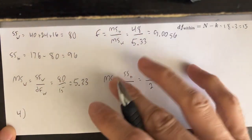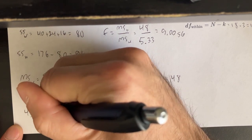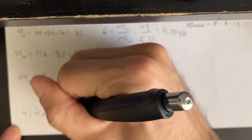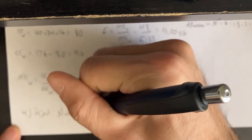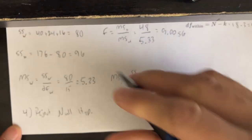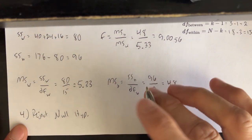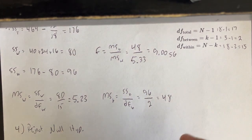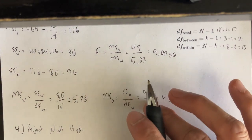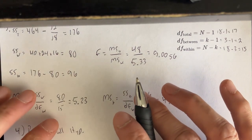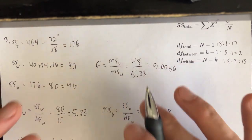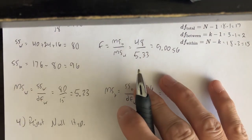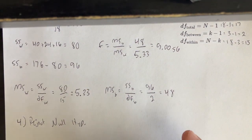Our final step is to make a decision: we reject the null hypothesis and conclude that there is at least some difference between at least one of the means. At this point we would conduct post-hoc testing, which will be covered in the next example.